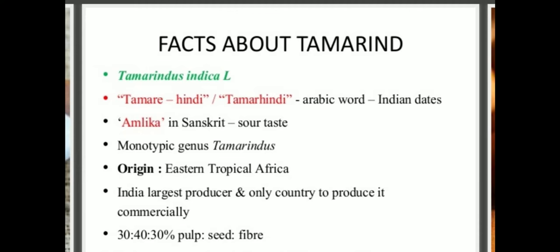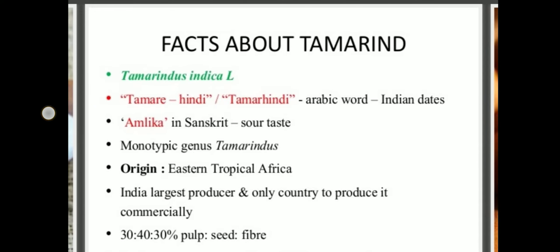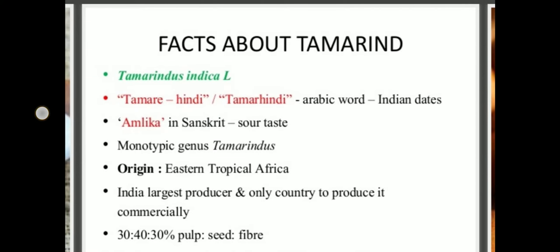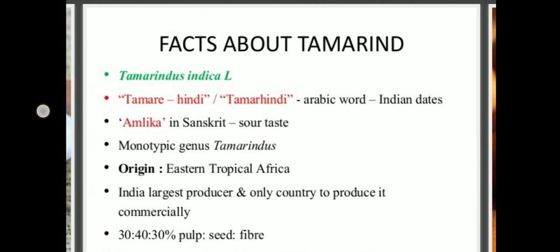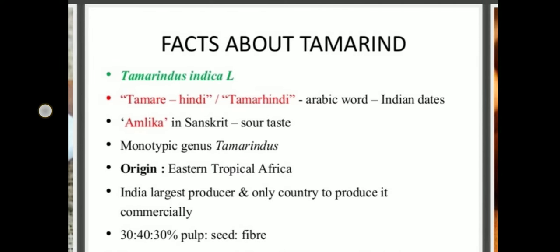The genus is Tamarindus. Its origin is eastern tropical Africa, but India is the largest producer of tamarind and the only country to produce it commercially. The southern states are the largest producers. Tamarind has three parts: pulp (30%), seed (40%), and fiber (30%).